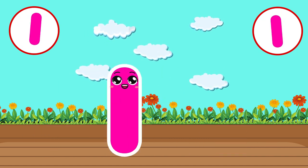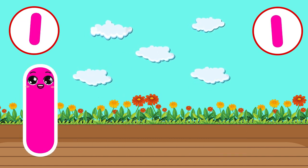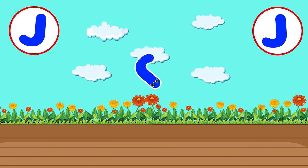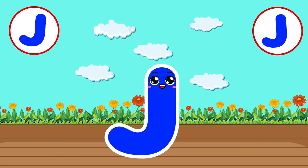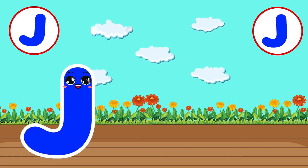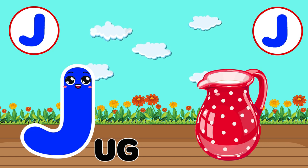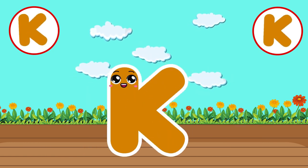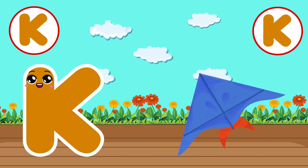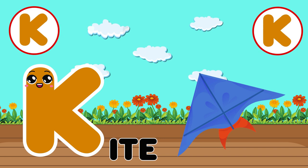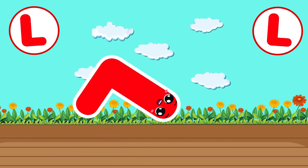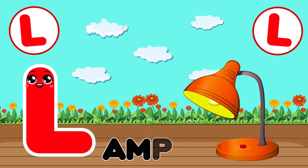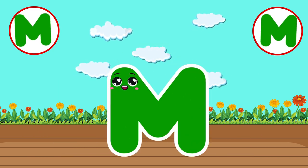I. I for Iron. J. J for Jug. K. K for Kite. L. L for Lamp.